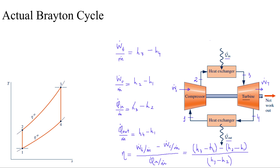In the previous video we had seen the ideal Brayton cycle and we had also looked at how the equations are written for each of the subcomponents. In this video we're going to look at the same Brayton cycle but we are going to see how the irreversibilities and losses have an effect on the Brayton cycle subcomponents, and because of that how the TS diagram changes and how the equations would change as well.